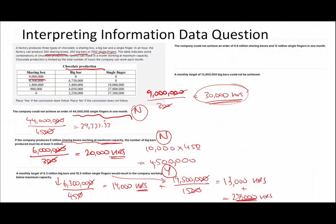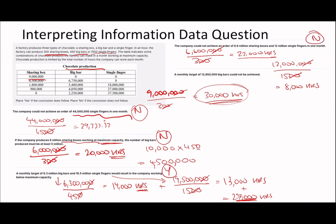Sub-question 4: the company could not achieve an order of 6.6 million sharing boxes and 12 million single fingers in one month. 6,600,000 divided by 300 = 22,000 hours. 12,000,000 divided by 1,500 = 8,000 hours. That adds up to 30,000 hours - exactly our total - so the statement is wrong.